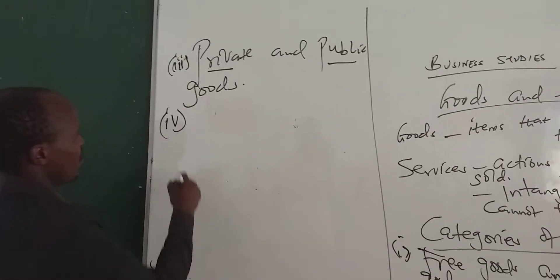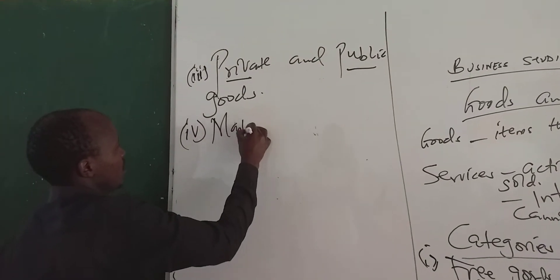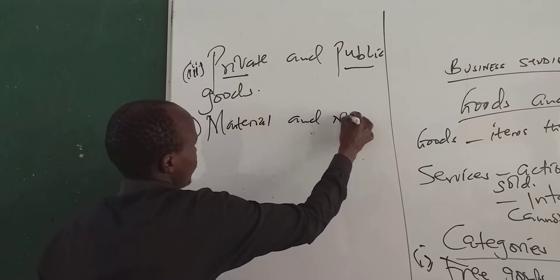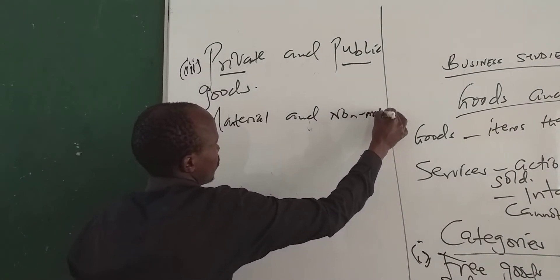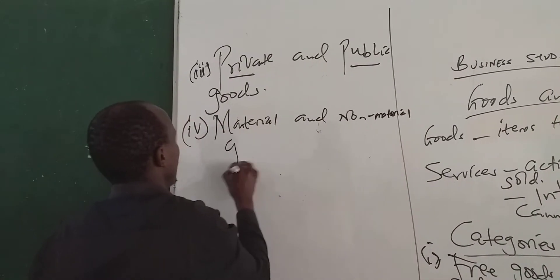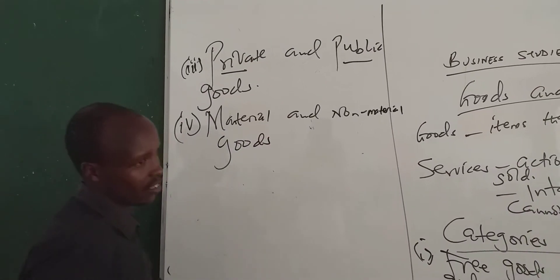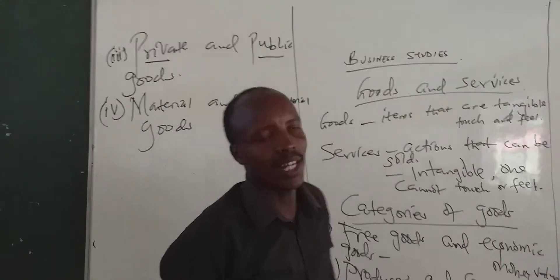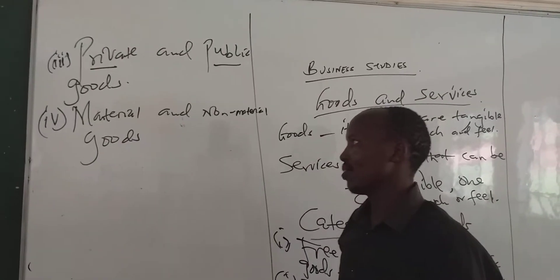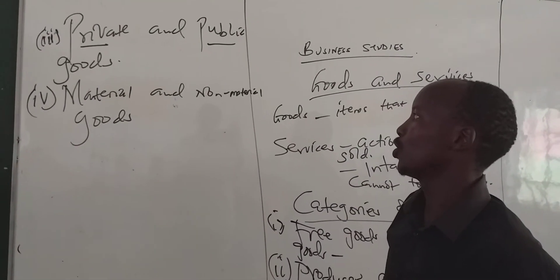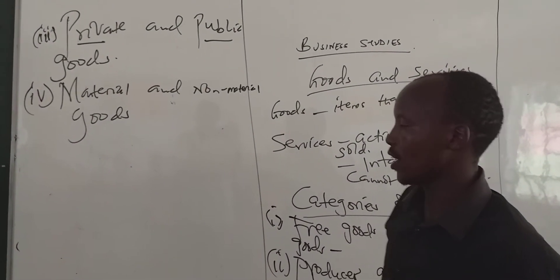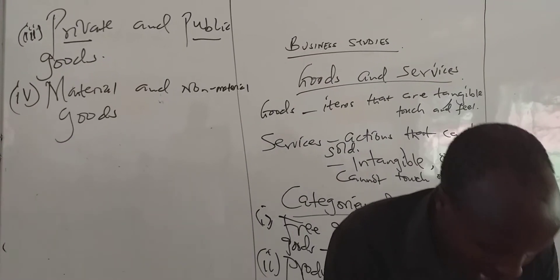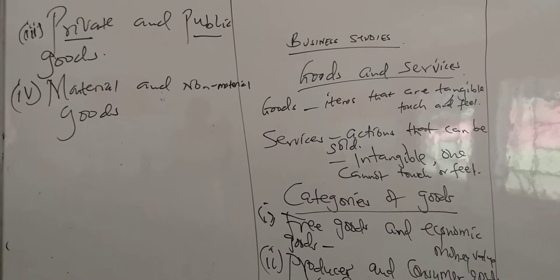Number four: we have material and non-material goods. When we talk of material goods, we mean goods which are tangible — which you can touch. While non-material goods are goods which are not tangible. In other words, material goods can mean physical goods, while non-material goods can mean services.